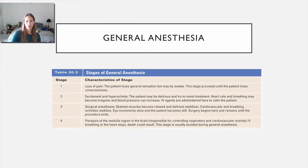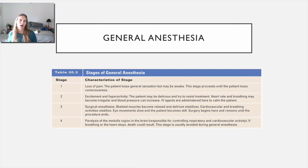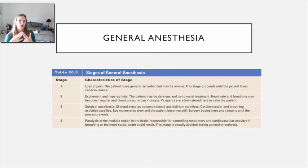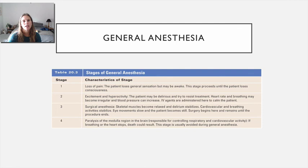To summarize: remember the three goals of general anesthesia, that no single drug can meet all those goals, and that the agents used include benzodiazepines, barbiturates, and narcotics. Routes of administration are IV or inhalation. In the next video, we'll move on to drugs that selectively modify the central nervous system, starting with epilepsy and then Parkinson's disease.